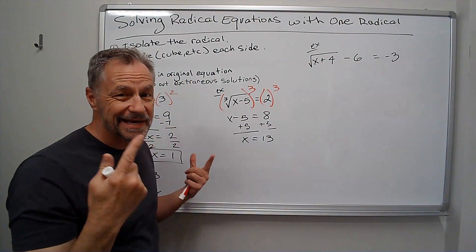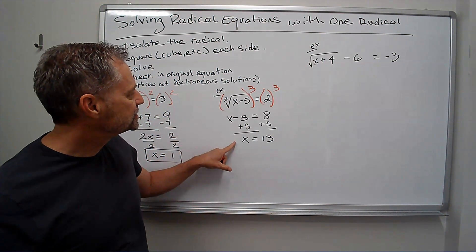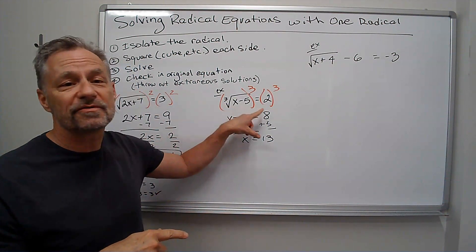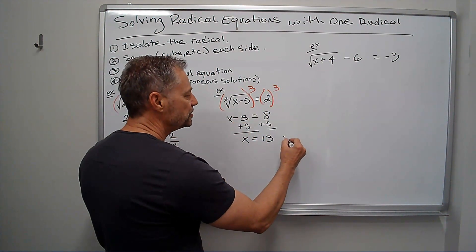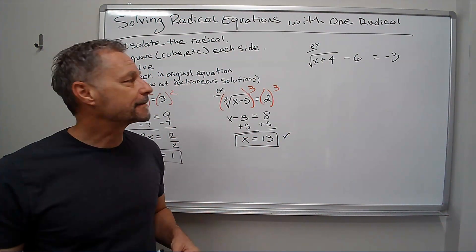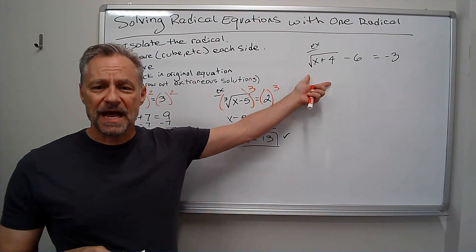I'm just going to plug that in my head. So let's see. I've got 13 minus 5 is 8. And the cube root of 8 is 2. It does check. I'll put a little check mark next to it to say I checked it. But it does check.